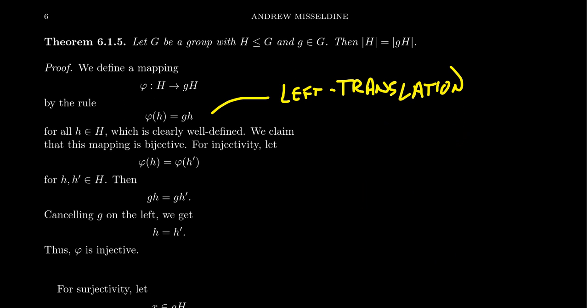Although we talked about right translation by (1 2), there was nothing special about that element. Right translation is always going to be a bijection, and so is left translation — the side that you multiply by doesn't matter. So even though we've proven that before, we're going to provide the general proof right now. It's going to be essentially the same argument — mutatis mutandis, changing the appropriate parts from that previous proof.